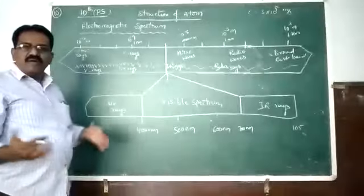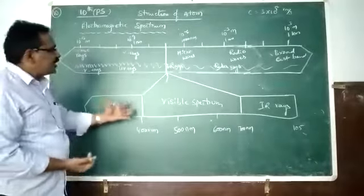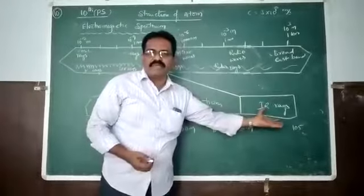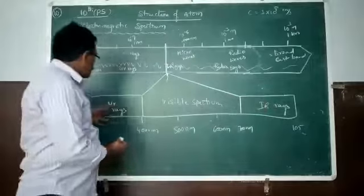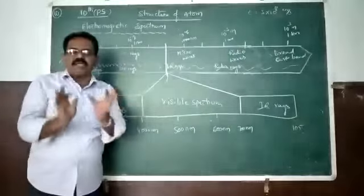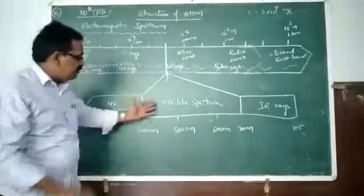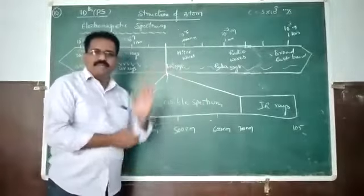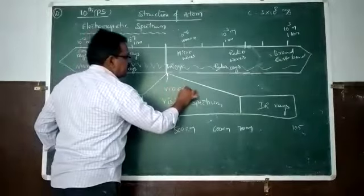We can't see the UV rays. Non-visible. Next one, IR rays. We can't see, these are invisible rays. We can't see with a naked eye. But we can see the visible spectrum. It consists of seven colors.